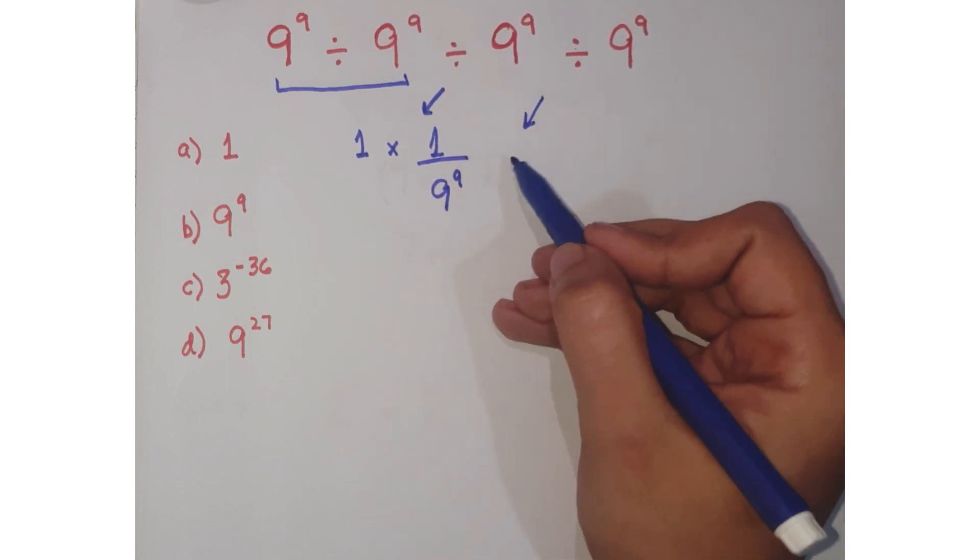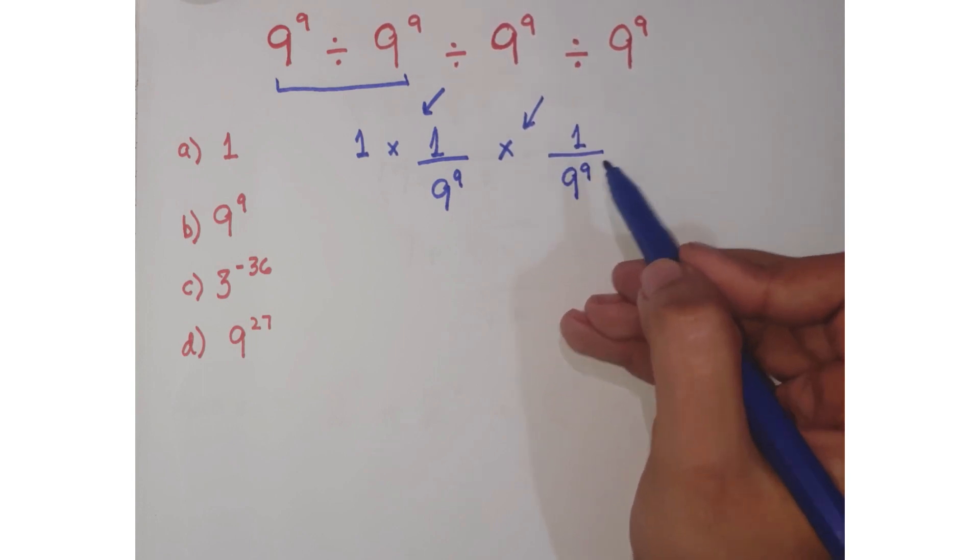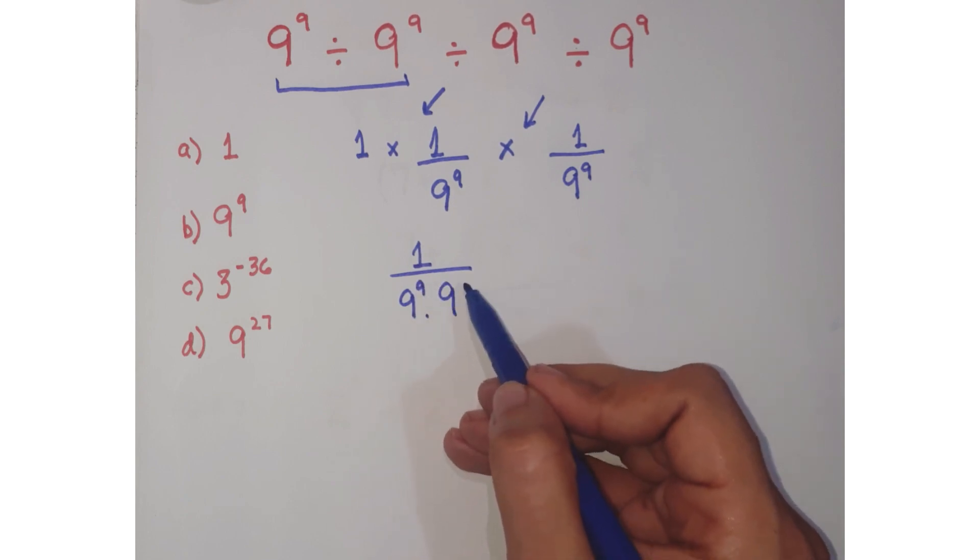Similarly, change this division sign into multiplication and flip the next number. So you get 1 over 9 to the power 9 times 9 to the power 9.